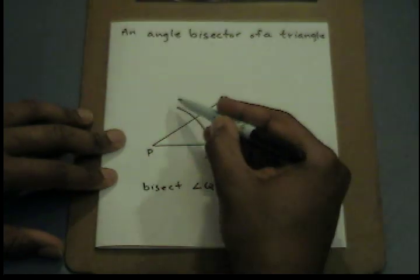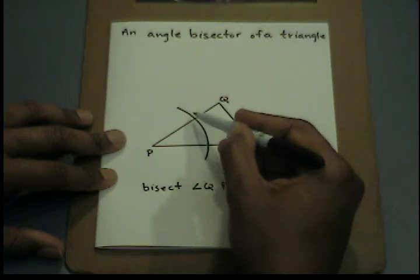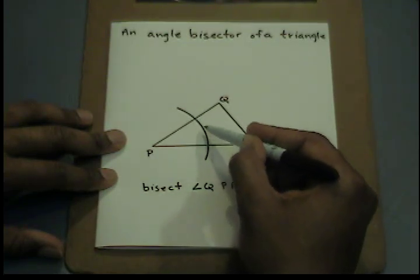Next, where the arc that I created intersects both rays, I want to estimate where I think the center of that arc is between these two points. I would say about here.